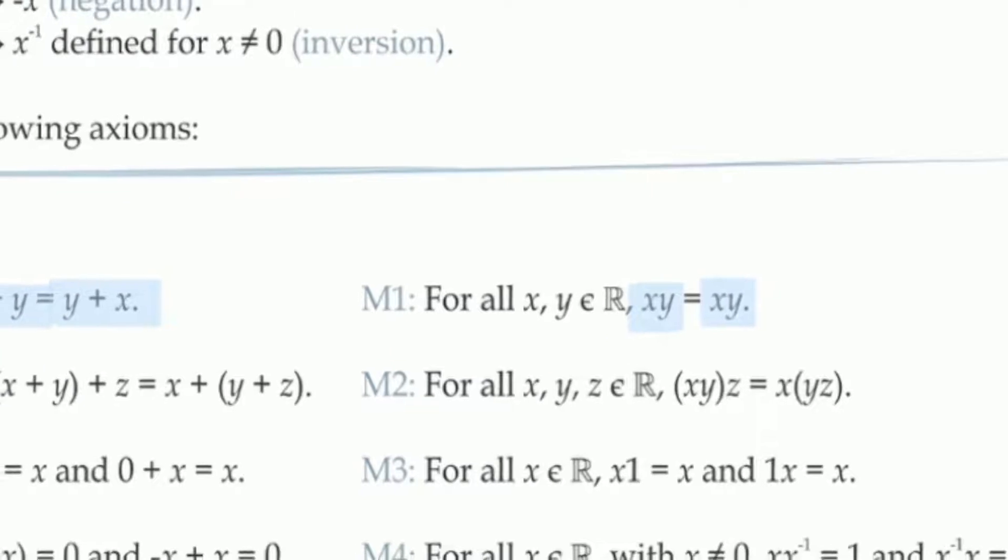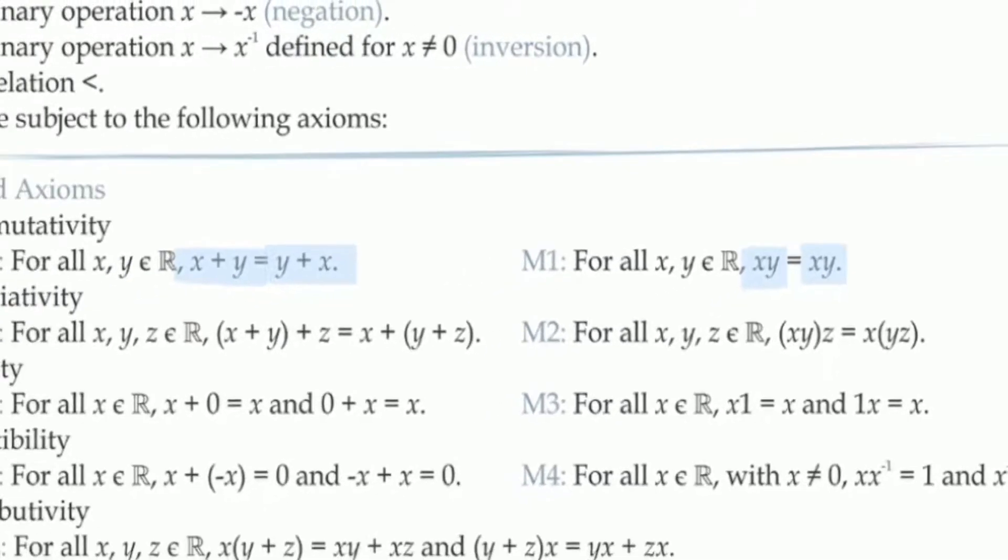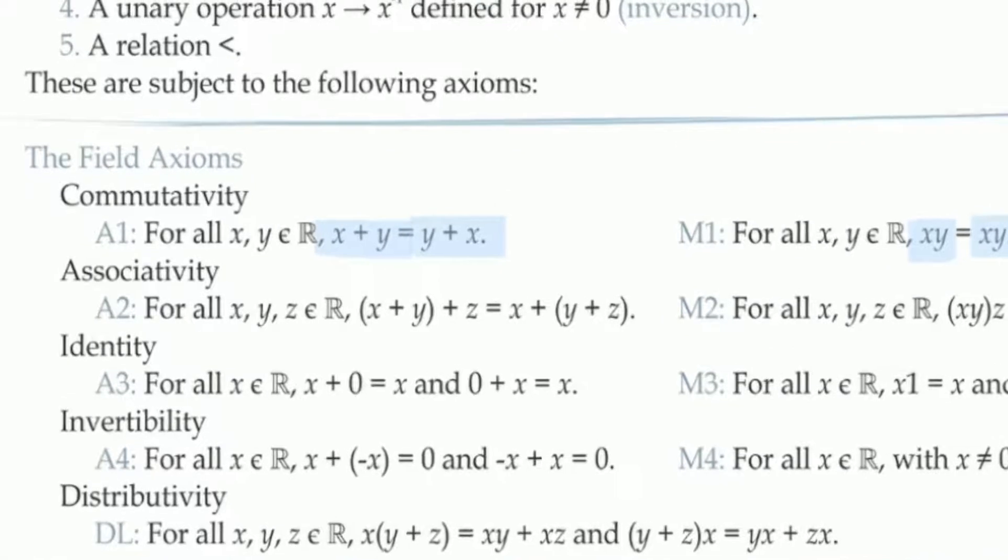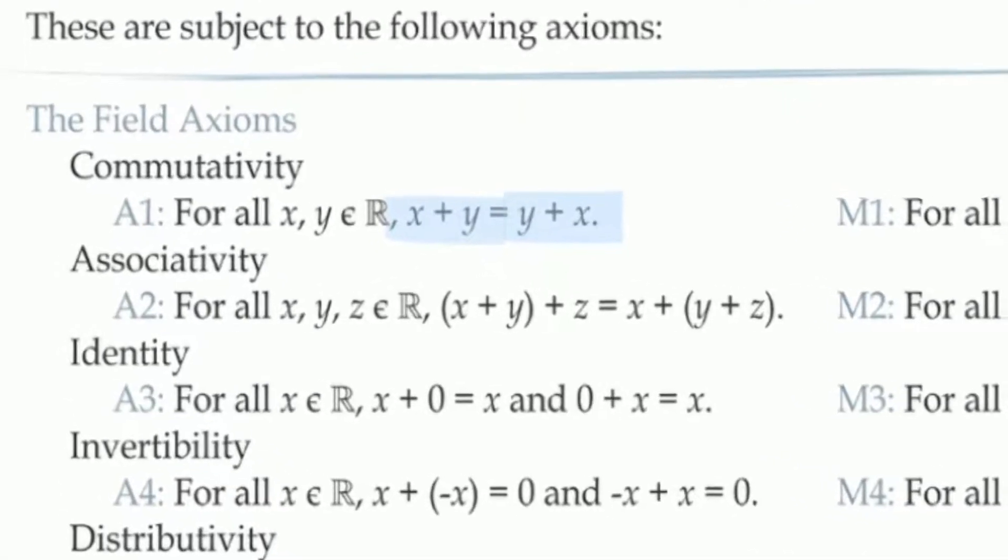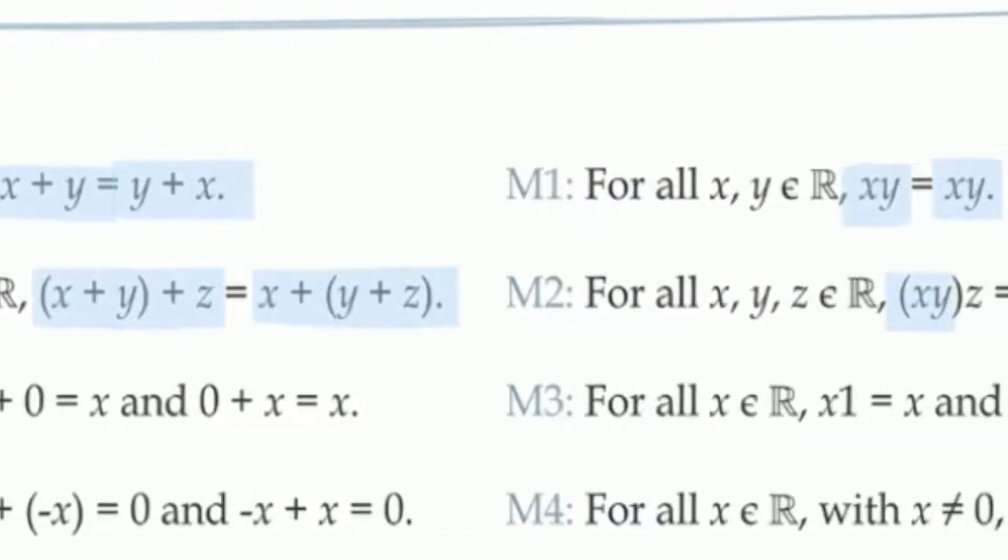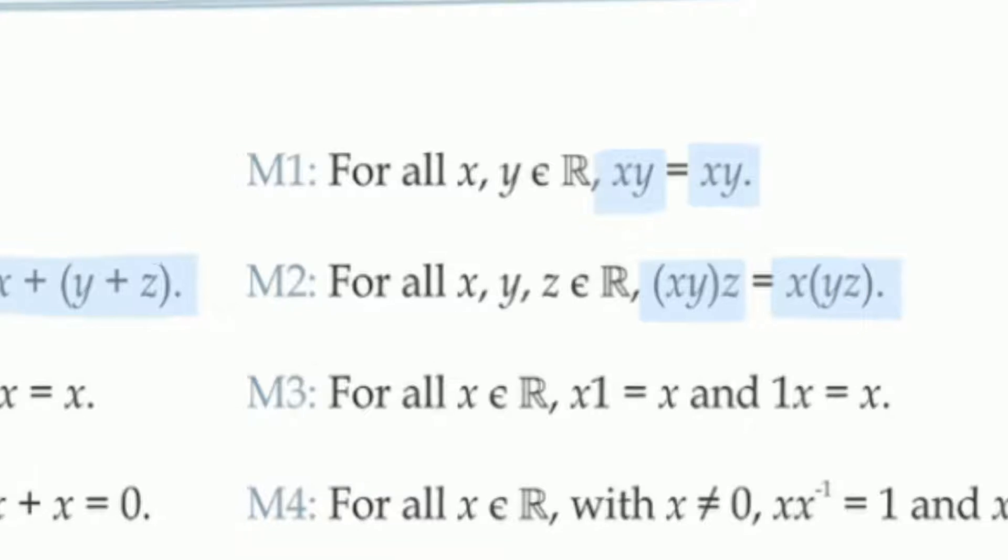The next pair, axioms A2 and M2, tell us that both binary operations are what we call associative. This tells us how we can add or multiply three numbers. If we have a set of three numbers and we want to add them, this axiom tells us that it doesn't matter which two we add first. We can group the first two and add that sum to the third, or we can add the first number to the sum of the second two. It doesn't make any difference. And axiom M2 says the same thing about multiplication.